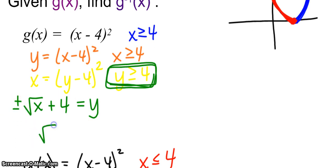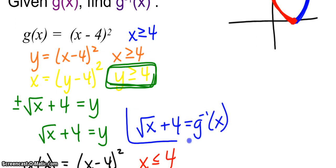So I only want to keep the positive square root of x plus 4 will be equal to y, which means positive square root of x plus 4 is equal to g inverse of x. Because of this y is greater than or equal to 4, we want to keep the positive part.